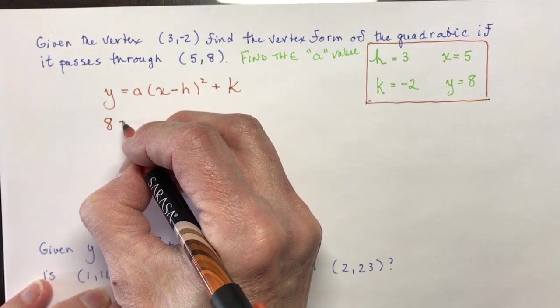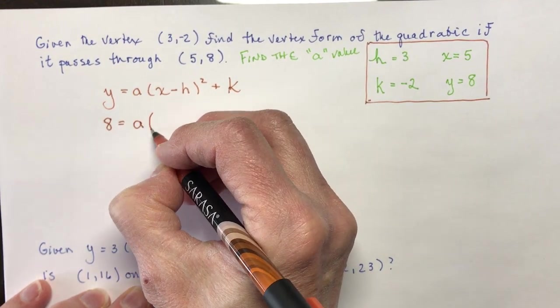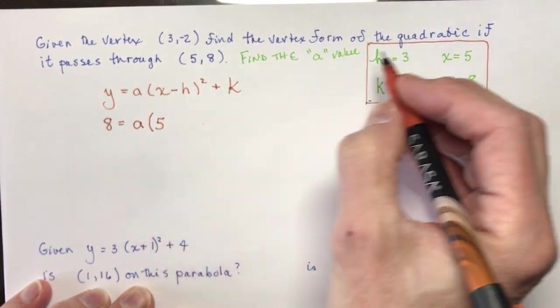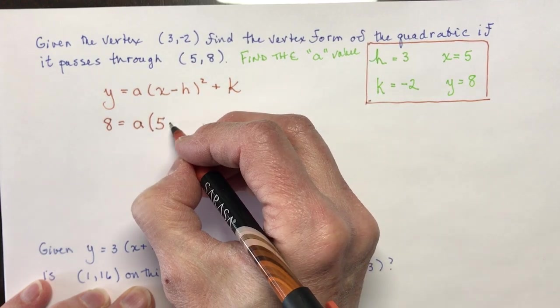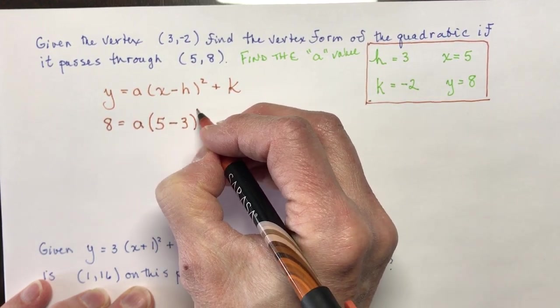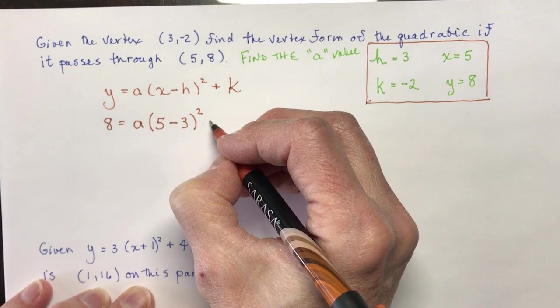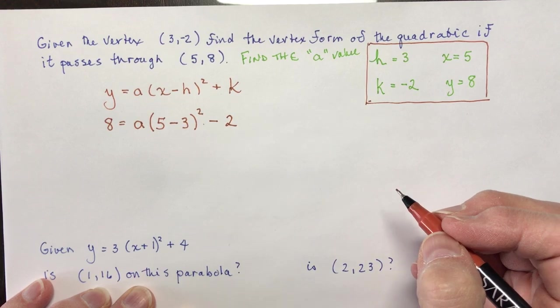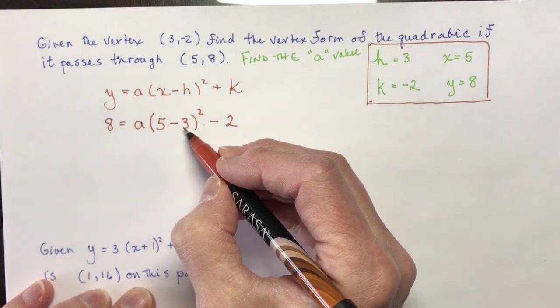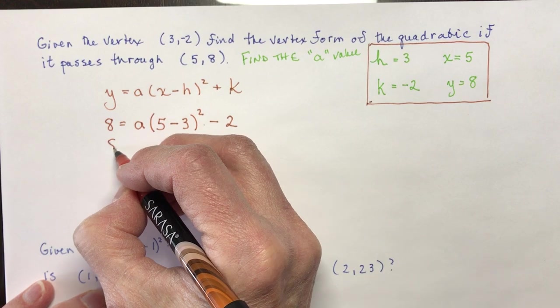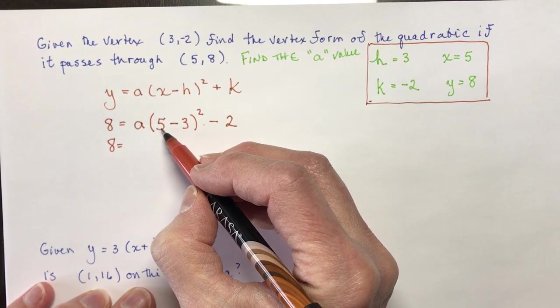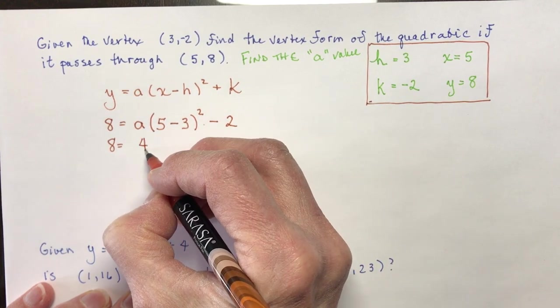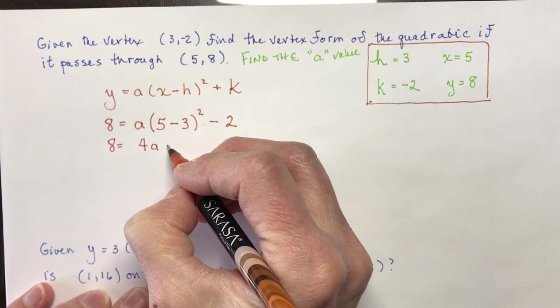So I put in the 8. I'm solving for a. It's good that I have an unknown. My x is 5. And I'm going to subtract my h. So if this was minus, you would make this plus, but it's not. It says minus 3. I'm going to square that. And then I have k here. Okay, so order of operations. You want to do what's in the brackets first here. So let's do it in lots of steps just so you don't get lost. So 5 minus 3 is 2. And 2 squared is 4. So this is 8 equals 4a minus 2.